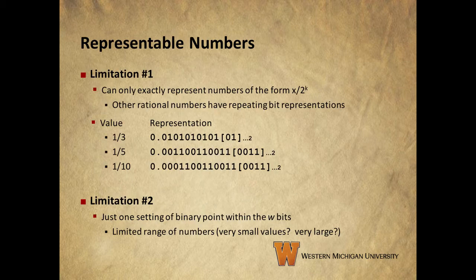There are a couple of limitations to the numbers we can represent with fractional binary numbers. First, we can only exactly represent numbers with the form x over 2 to the k. Other rational numbers have repeating bit representations. Some examples are shown here. The bits in the square brackets at the end of each example indicate the bit patterns that keep repeating. Another limitation revolves around the ability to set just one location for the binary point within your word. This limits the range of numbers you can represent.